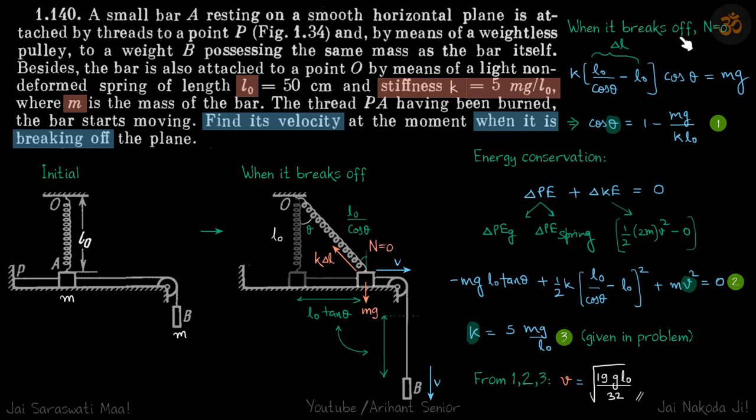First, let's write the force perpendicular to the plane. Now because n is equal to zero and it is just breaking off, the force perpendicular must be zero, which means k delta l cos theta must be equal to mg.